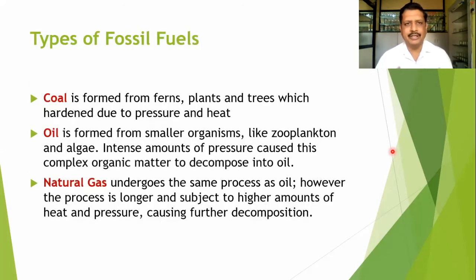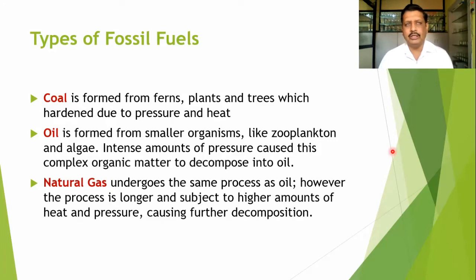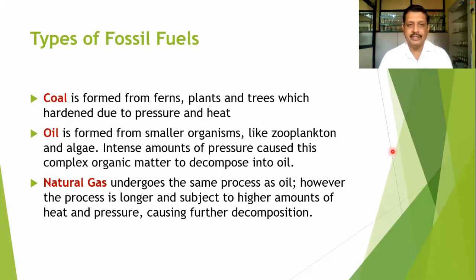There are basically three types of fossil fuels: coal, oil, and natural gas. These are formed through three different processes involving different types of plants and organisms.